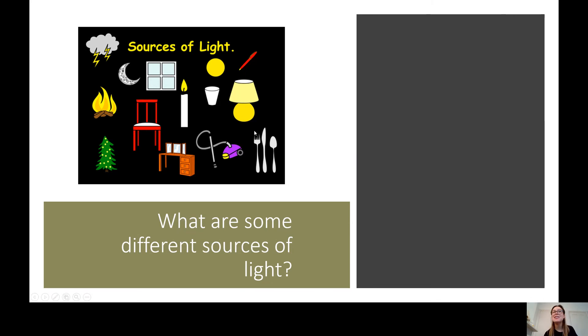Not all of these are sources of light, so they're here to trick you. For example, spoons and forks, knives and a vacuum cleaner are not sources of light. So don't just go copying everything that's here, but have a think. For example, a chair, is that a source of light? A source means somewhere that light comes from. So pause this video now and write down some different light sources.